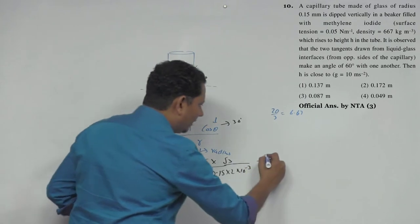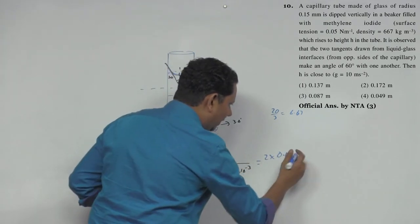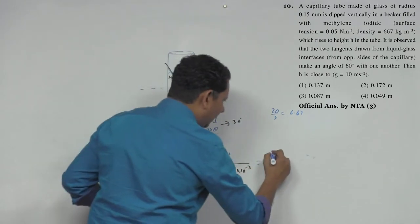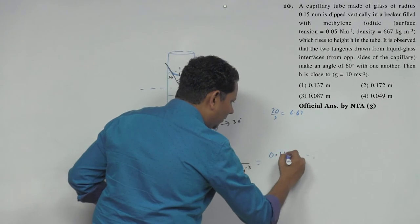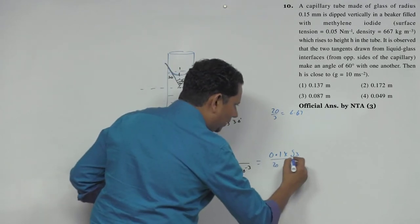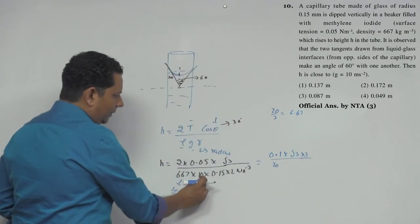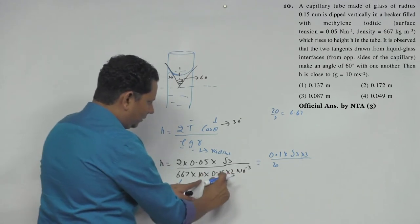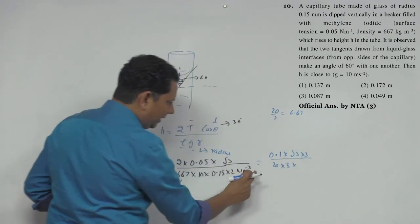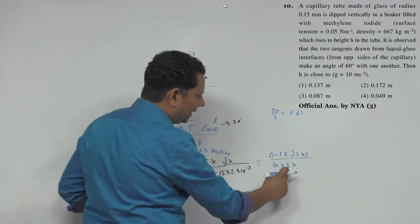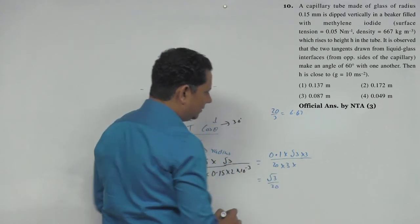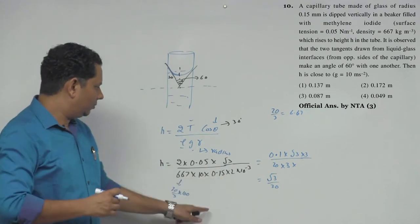Continuing the calculation: 2 × 0.05 = 0.1. So we have 0.1 × √3 divided by (20/3) × 10 × 2. After multiplying 20/3 upward and cancelling the 3, we get √3 / 20 as the remaining expression after all cancellations.